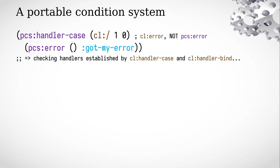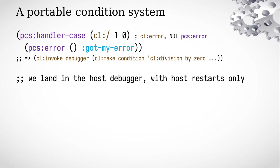Therefore, the host error function — which functions in a similar way to our guest one — first checks and calls all the handlers established by the host handler-bind, handler-case, and ignore-errors, and if no handler manages to transfer control, the debugger is entered. This time it is the host debugger with a host condition object, and we land in the host debugger with only host restarts visible.